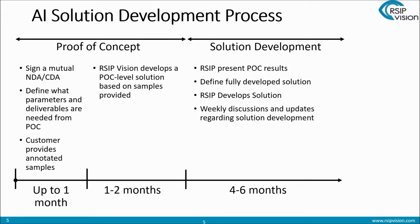The other aspect is that once we know more about your projects and your data set, it makes it easier for us to really understand and estimate the effort required. So we start with the proof of concept — it all starts when we sign a mutual NDA or CDA. Then we define what parameters and deliverables are needed from the POC. By definition, it will not be the full solution — it will be something initial, but enough for you to get an impression. Then you provide annotated samples.